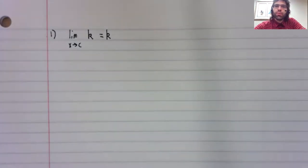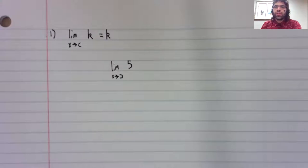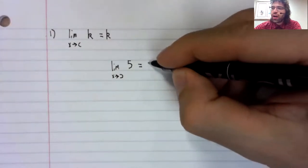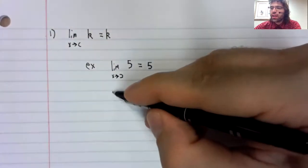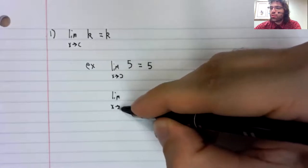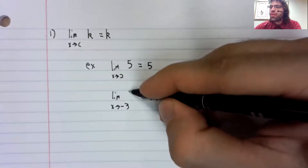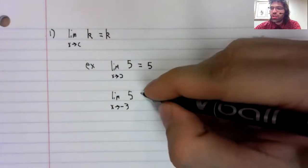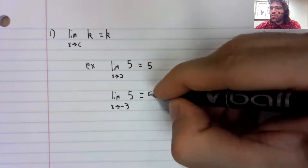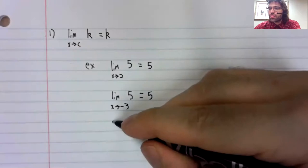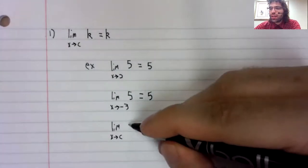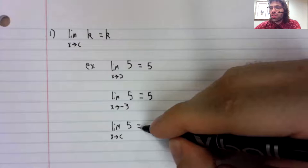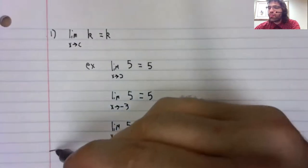So for example, the limit as x approaches two of the constant function five is five. And the limit as x approaches negative three of the constant function five is five. And in fact, the limit as x approaches anything of the constant function five is five.